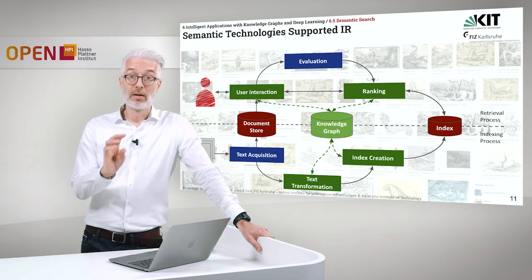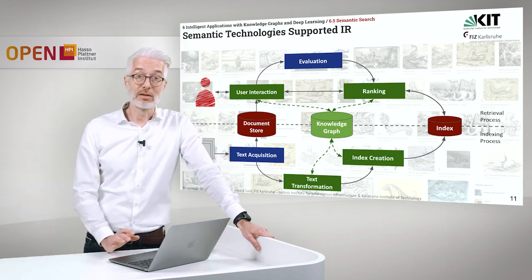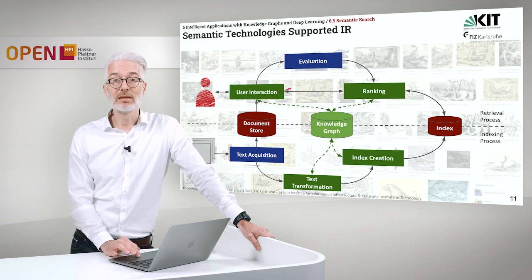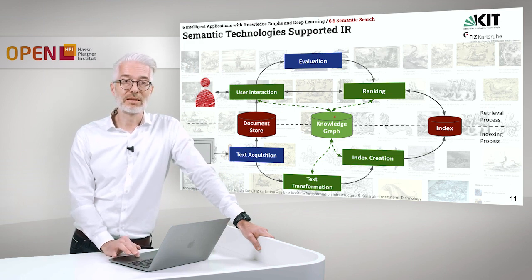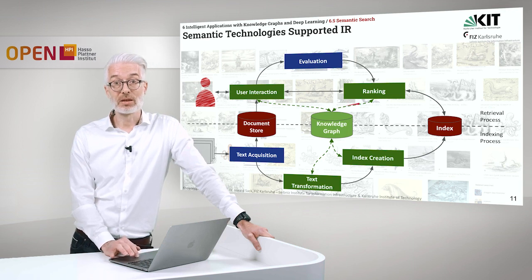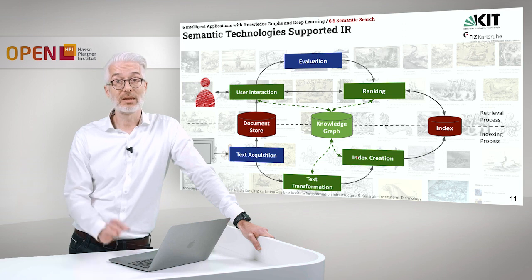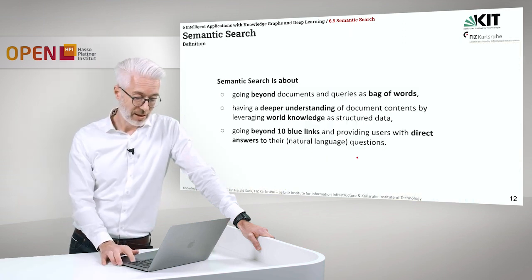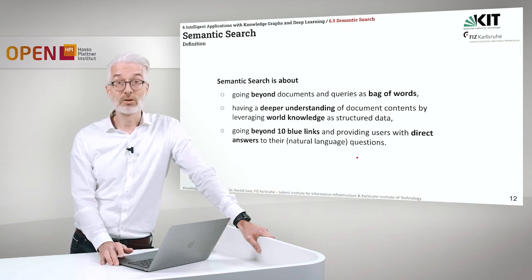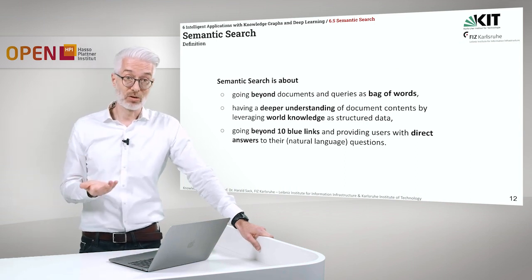Now, knowledge graphs can easily be integrated into that process. They can be put in the middle between the document store and the index. And then, of course, they are influencing very much the ranking, the interaction, the text transformation and the index creation in general. So, let us have a closer look at what then becomes semantic search.